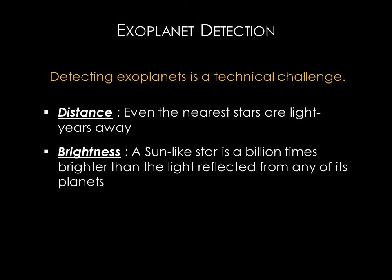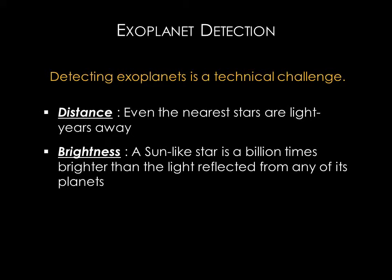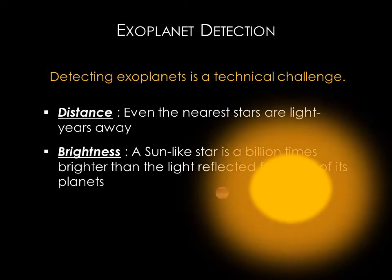Detecting exoplanets is a technical challenge. There are two main obstacles to detection. First, stars are very far away — even the closest stars are light years distant. Second, stars are much, much brighter than the planets that orbit them. A Sun-like star is a billion times brighter than the light reflected from any of its planets, so imaging a planet next to a distant star is quite difficult.